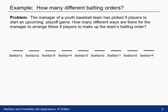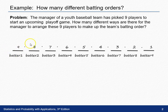How many choices do I have for the first batter? Well, there are nine players, so I can put nine different players here. How many choices are there for the second batter? Eight — once I've selected the first one, I only have eight left. If I continue this process, I'm going from nine players to eight, to seven, to six, to five, all the way down to the last batter where there's only going to be one person left for that spot.